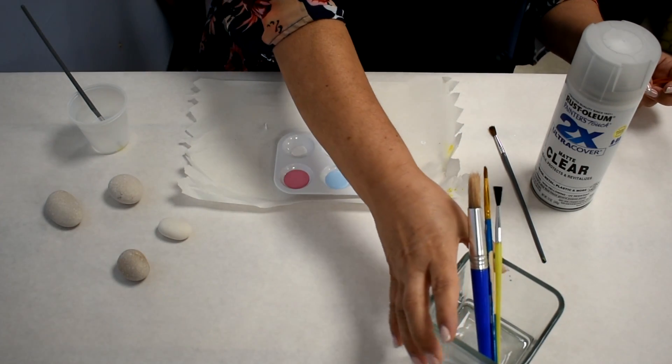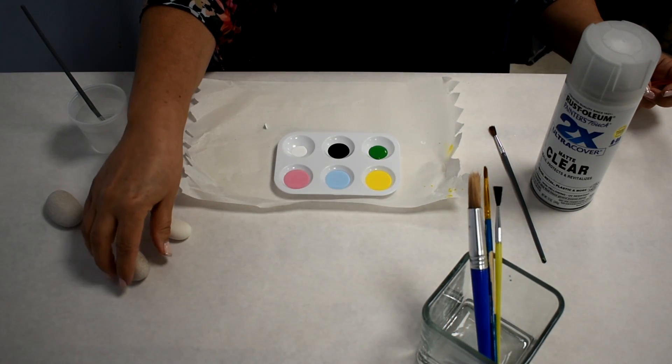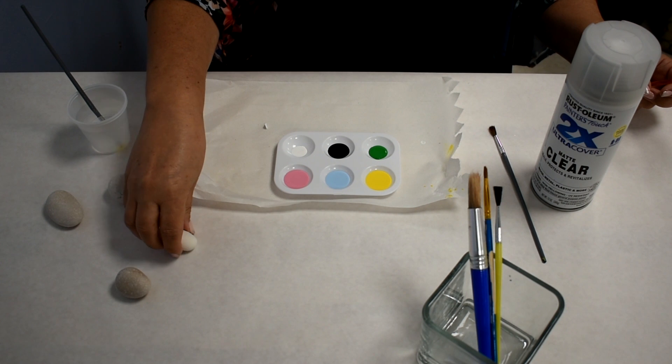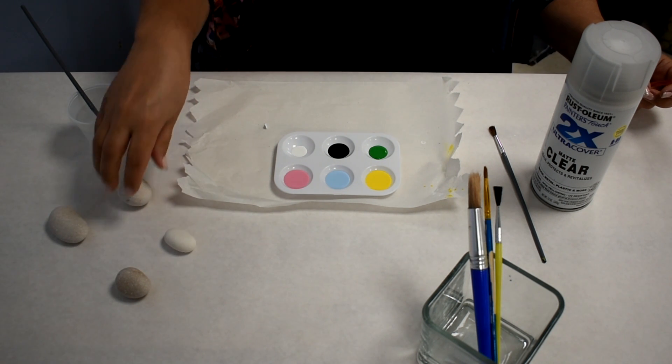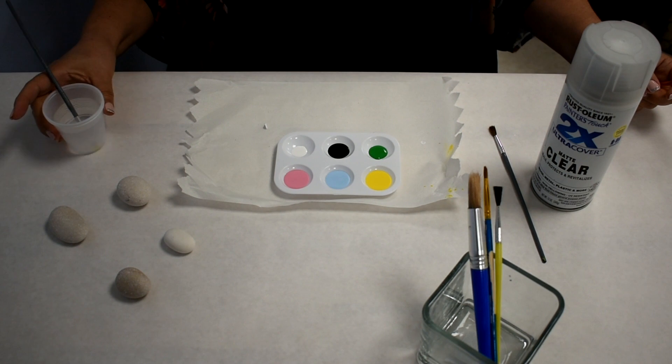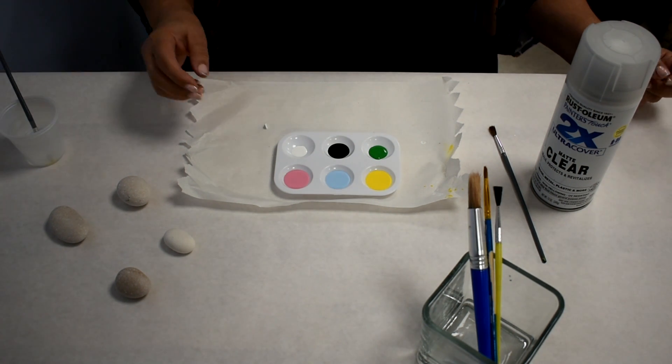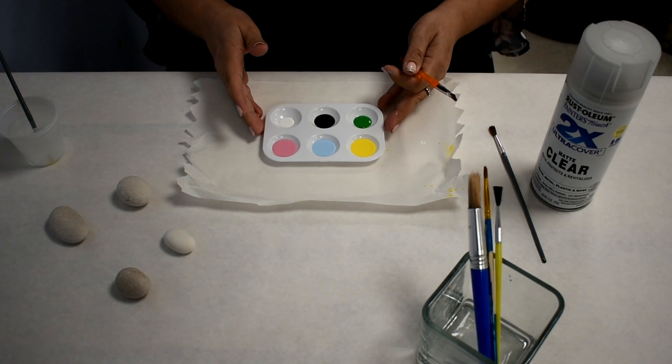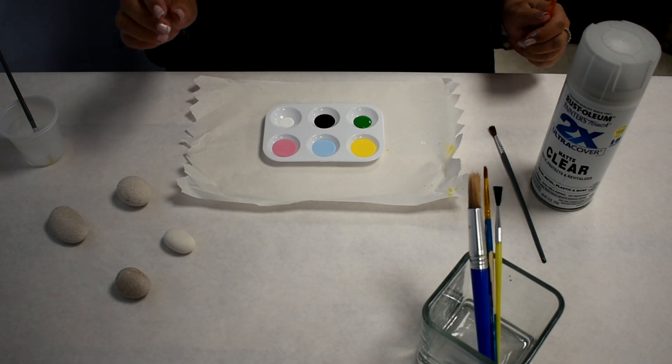Number three, paintbrushes. Four, the sealant spray. You can get from any craft store. Number five, a toothpick for tracing or for small dots.